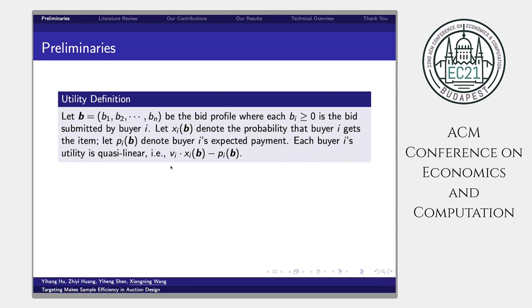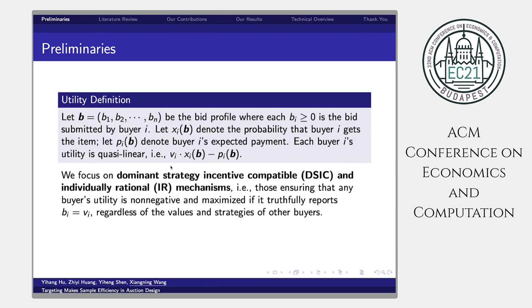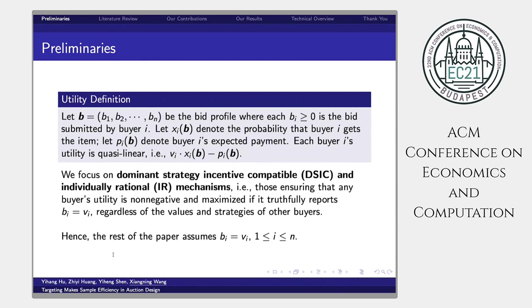Given our utility definition, we are able to focus on dominant strategy-incentive-compatible and individually rational mechanisms. That is to say, those ensuring that any buyer's utility is non-negative and maximized if we truthfully report the bid equals to the value, regardless of the values and strategies of other buyers. Hence, in the rest of the paper, we assume bi always equals to vi for every buyer i.